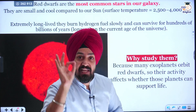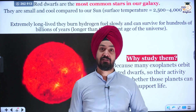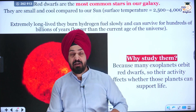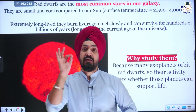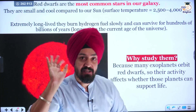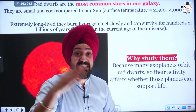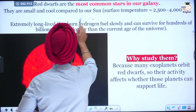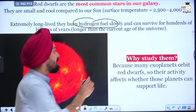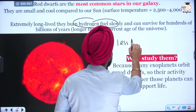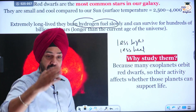None of the red dwarfs has died yet in the universe — from 10 billion years ago till now, none has died. They can live longer than the sun because hydrogen fuel is burning very slowly. If hydrogen fuel burns slowly, they emit less light and less heat, which makes their life longer.